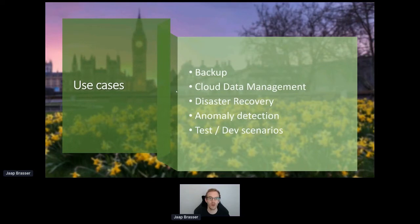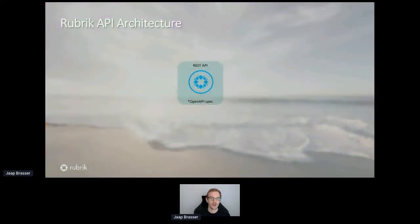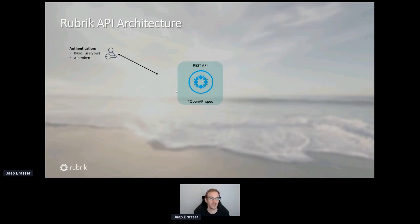So first thing — what do we actually do? We're a backup and cloud data management company. Our product handles taking backups, organizing these stores, disaster recovery, but also more advanced things such as anomaly detection or spinning up a test and development lab environment. We're talking today about our REST API, and I want to give a bit of background of how it's structured and where we're coming from. When using our API, you authenticate using either a username and password or an API token.